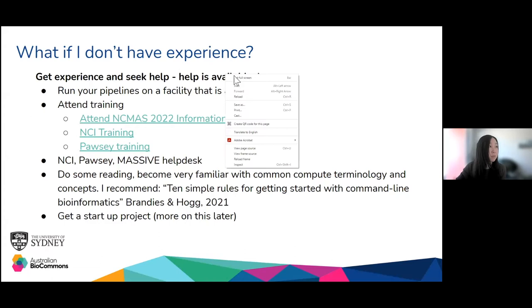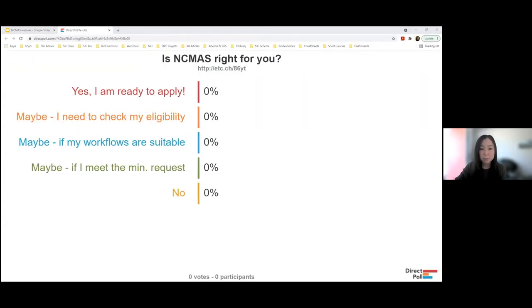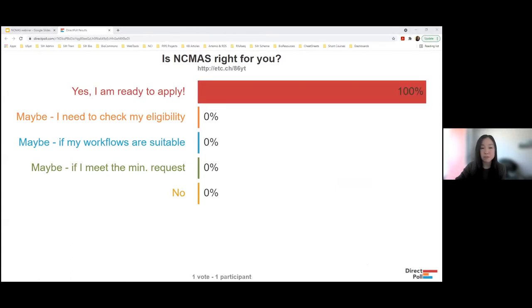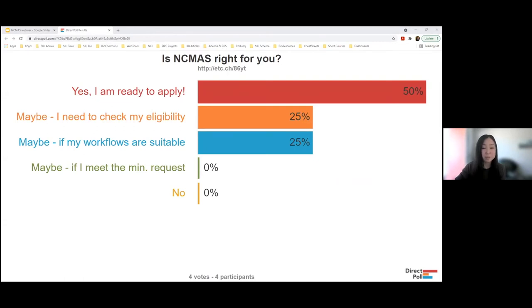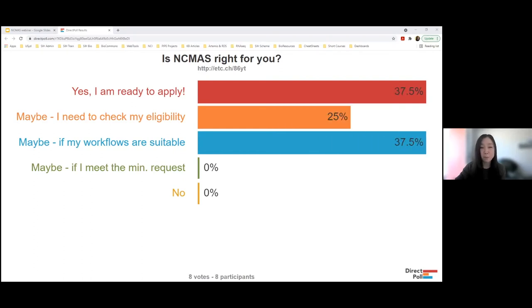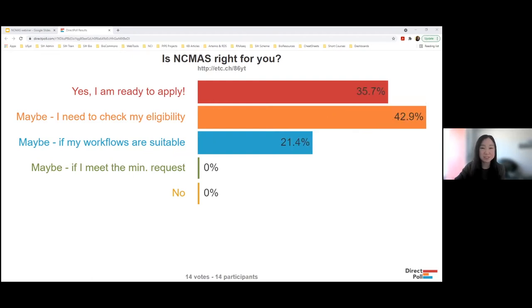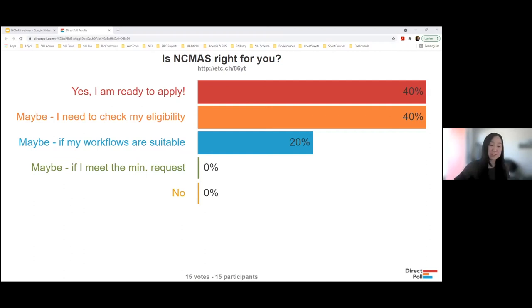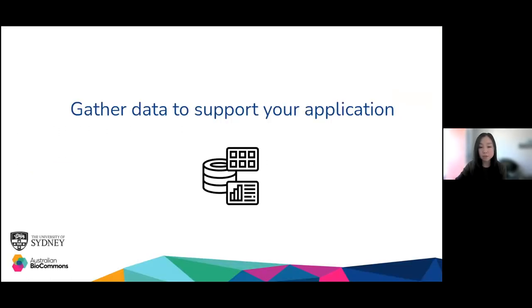Our second poll question is: is NCMAS right for you? Options are: yes, I am ready to apply; maybe, I need to check my eligibility; maybe, if my workflows are suitable; maybe, if I meet the minimum compute request; or no. Looking at the responses — I'm glad none of you have clicked no. It is a full-on process, so it is good to be sure this is the right thing for you.